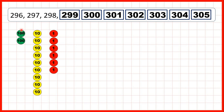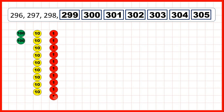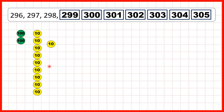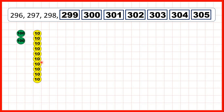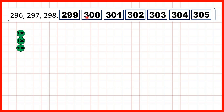Now, 296 means we have 2 hundreds, 9 tens, and 6 ones. We can keep on adding 1s. So here we've got 299. But if we add just one more 1, we get to 300. That's because we've now got 10 ones, so we need to exchange those ones for 1 ten. And doing that means we have 10 tens. So we exchange those 10 tens for an extra 100, which means we have 300. Then we can keep on adding 1s until we get to 305.